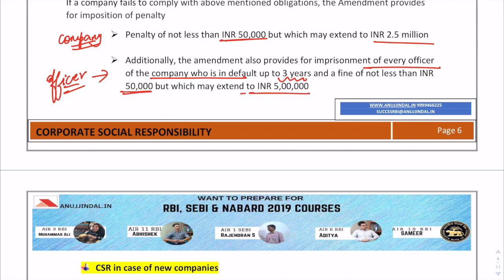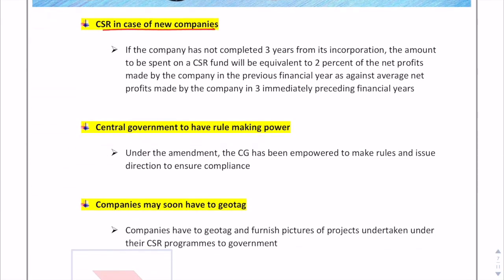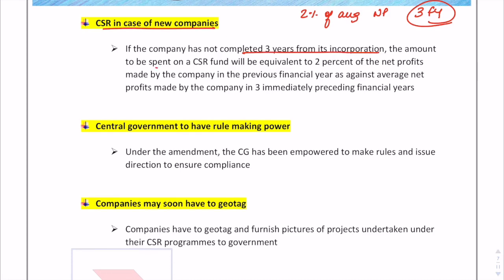The third amendment addresses CSR for new companies. As discussed, CSR requires two percent of average net profits over the preceding three financial years. But what if a company is a startup and has not completed three years from its incorporation? The amendment provides clarity: for such a company, the amount to be spent on CSR will be two percent of the net profits made by the company in the previous financial year, as against the average over three years.